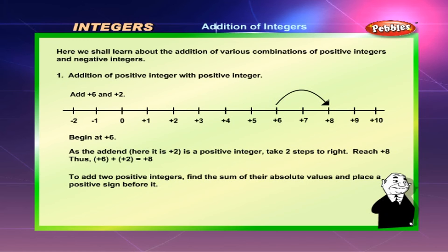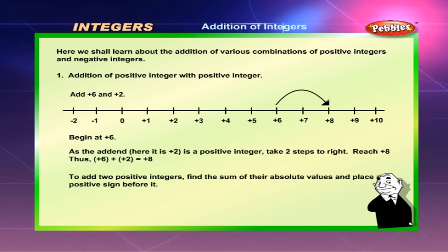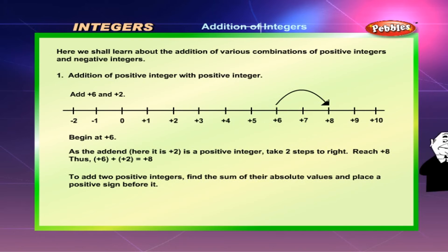Addition of positive integer with positive integer. Add plus 6 and plus 2. Begin at plus 6. As the addend is a positive integer, take two steps to the right. Reach plus 8. Thus, plus 6 plus plus 2 is equal to plus 8. To add two positive integers, find the sum of their absolute values and place a positive sign before it.